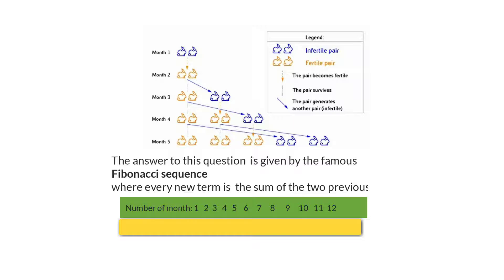The answer to the question of how many rabbits we will have at the end of the year — in month 12 — can be given by the famous Fibonacci sequence. Let's have a look at how many rabbits we're going to have.